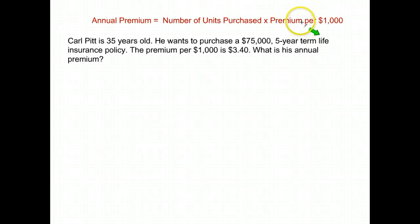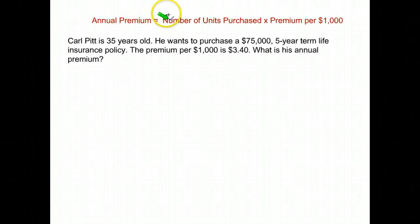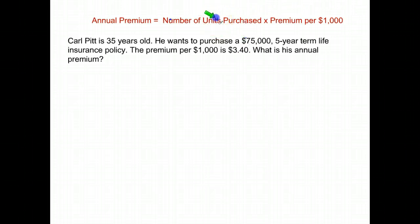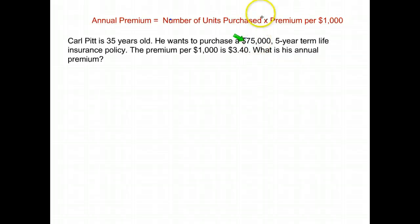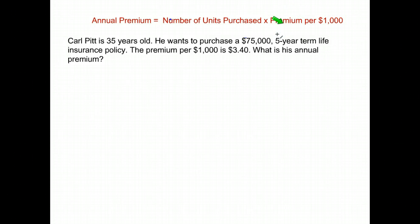Let's talk about life insurance and what you pay for it. To find the annual premium — the annual amount you pay — you take the number of units you're purchasing. That's per thousand, so for seventy-five thousand dollars, to find your number of units you take the amount of insurance you're purchasing and divide by a thousand. Then you multiply that by the premium per thousand dollars.